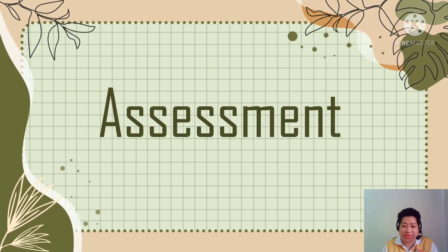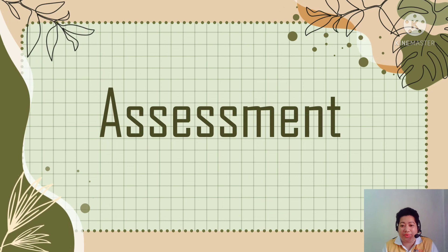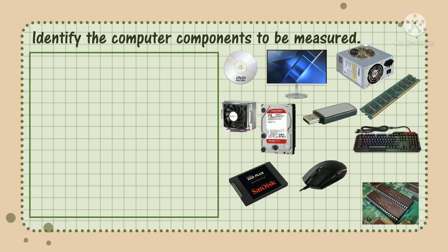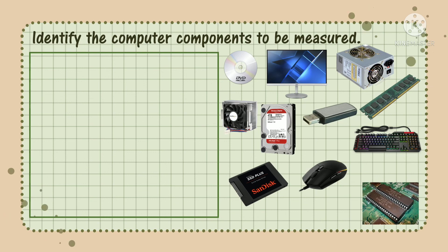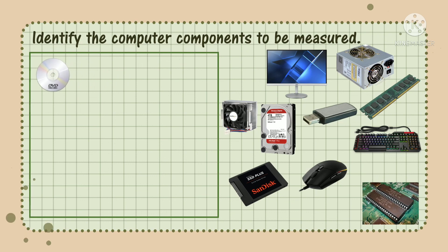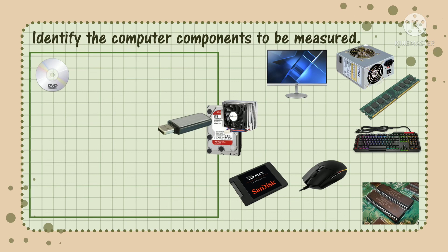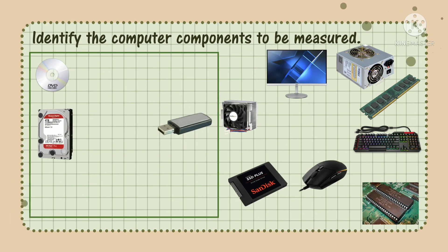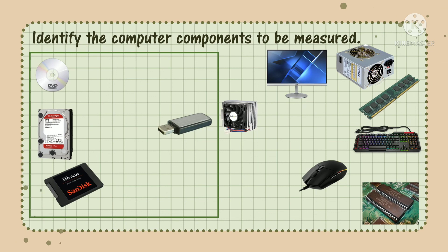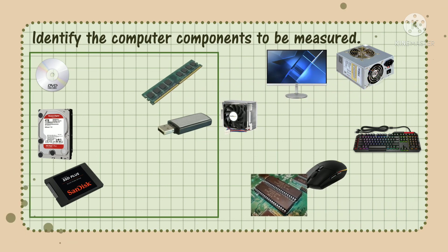Class, we are done with our discussion. Let me check if you truly understand our lesson. For the first activity, we are going to identify the computer components that need to be measured, especially the storage devices. First is the DVD, next is the USB flash drive, then we have the HDD, the SSD, the RAM, and the ROM.